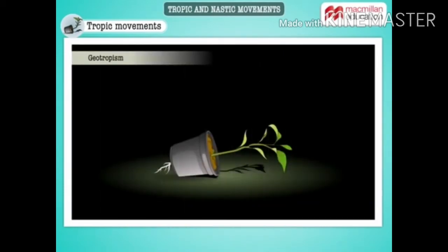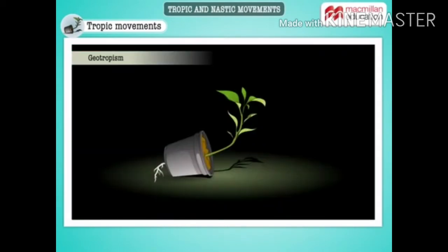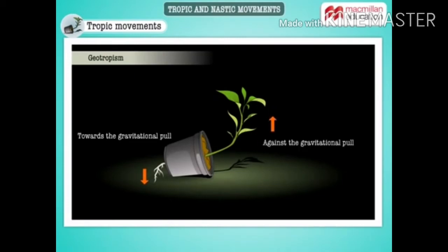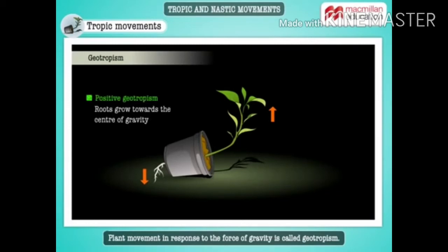Let us place this potted plant horizontally for a few days. We have chosen a pot that is open on both ends. We see that the roots have grown downwards towards the gravitational pull. The shoots, however, have grown upwards against the gravitational pull. Plant movement in response to the force of gravity is called geotropism. The roots are positively geotropic while the shoots are negatively geotropic.